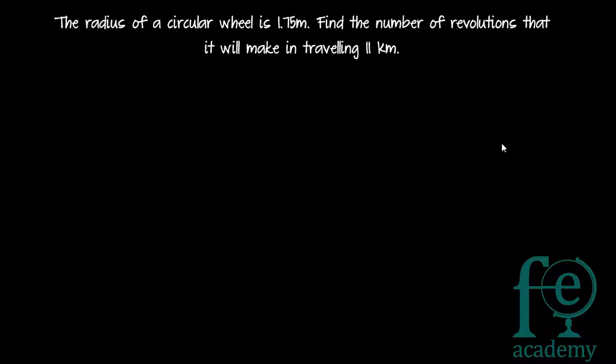Welcome to today's video on mensuration. The first question: the radius of a circular wheel is 1.75 meters. Find the number of revolutions it will make in traveling 11 kilometers. So the given information is radius r equals 1.75 meters, and you have to find the number of revolutions it will make in traveling 11 kilometers.